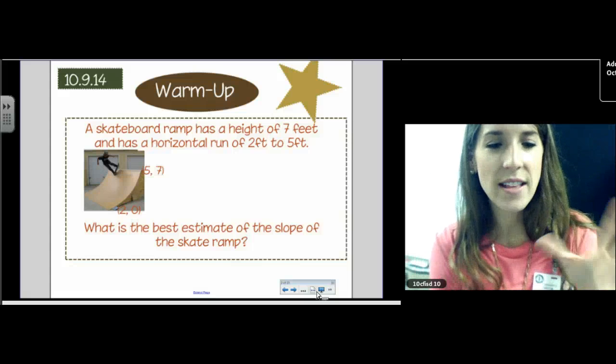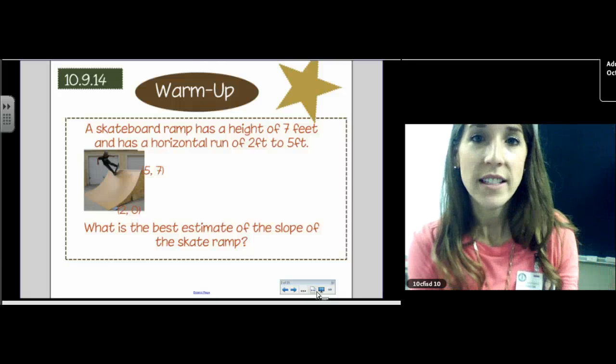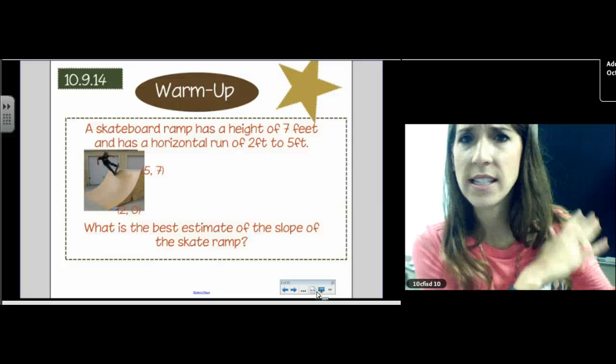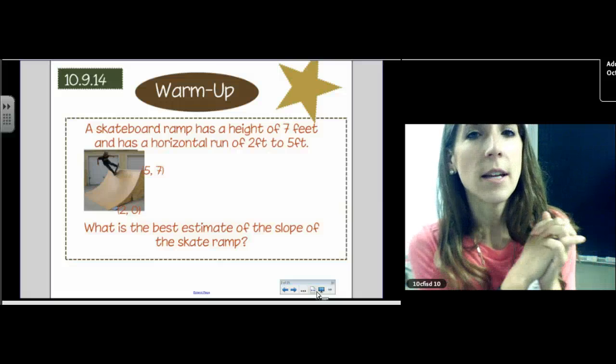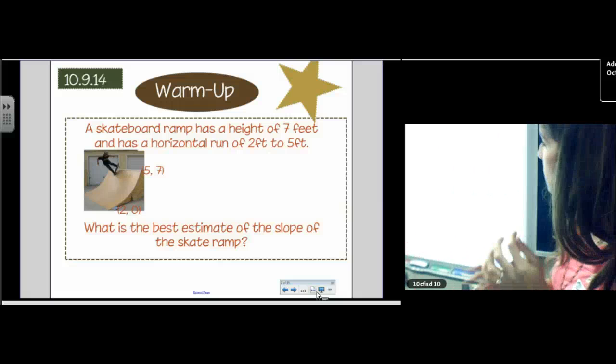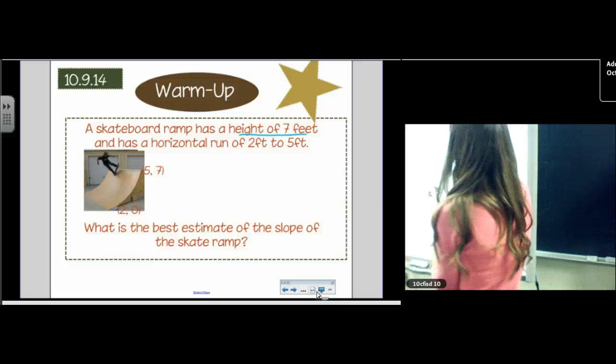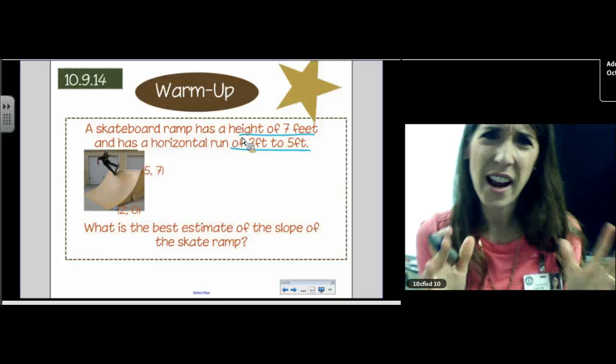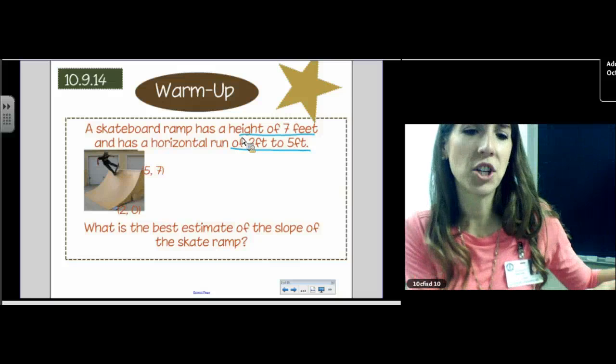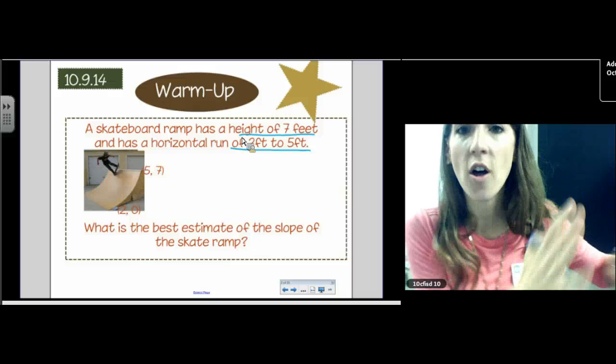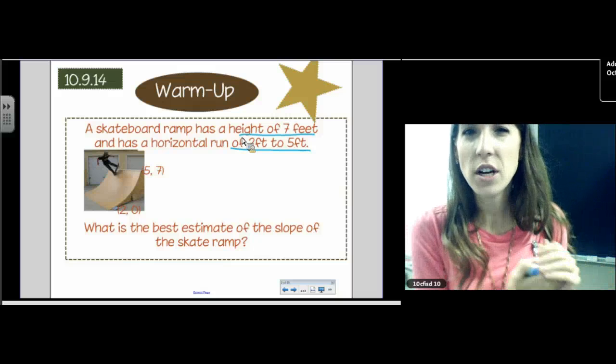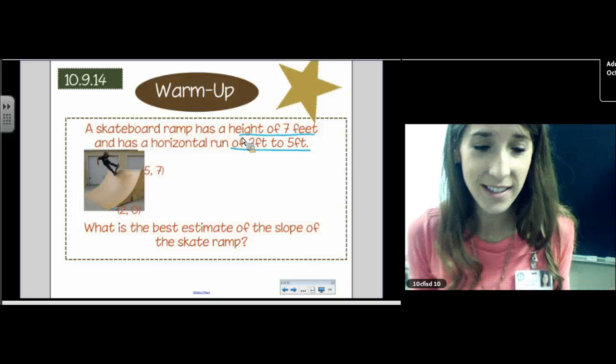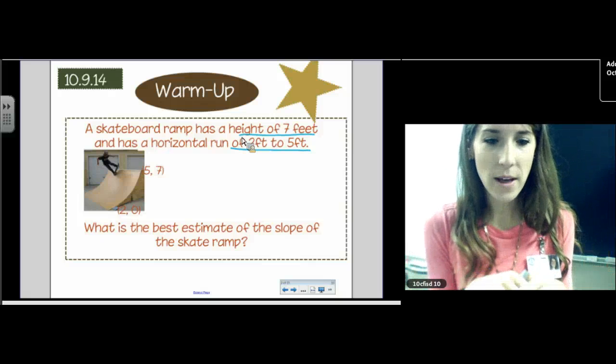So we'll do our best guess of the slope since it does have a curve and it's not perfectly linear. So do you see how in this warmup, and sometimes the problems that the district comes up with, sometimes they do that too. Sometimes they tell you something like it has a height of seven feet and a horizontal run of two feet to five feet. And you're like that sounds kind of complicated. But then you look at the picture and you realize they already put all that data in the picture. So it's kind of redundant.